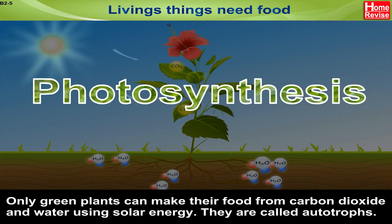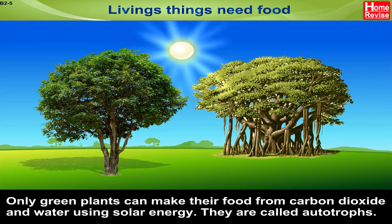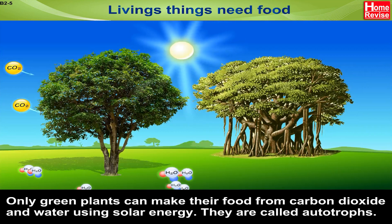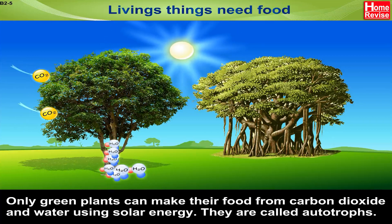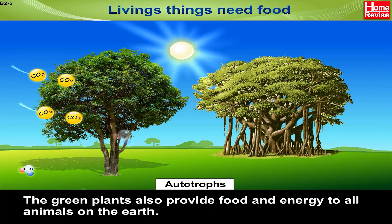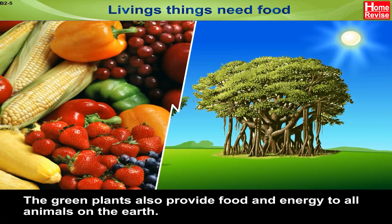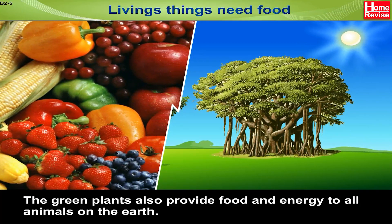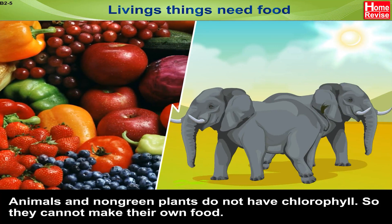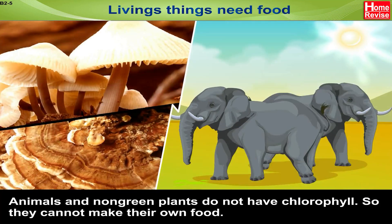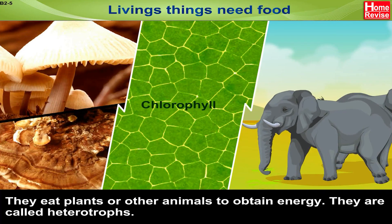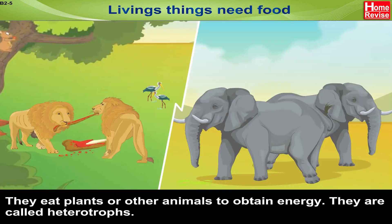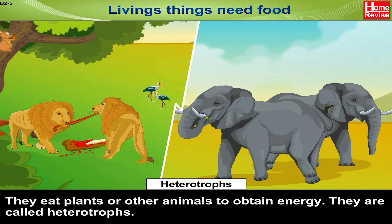Only green plants can make their own food from carbon dioxide and water using solar energy. They are called autotrophs. The green plants also provide food and energy to all animals on the earth. Animals and non-green plants do not have chlorophyll, so they cannot make their own food. They eat plants or other animals to obtain energy. They are called heterotrophs.